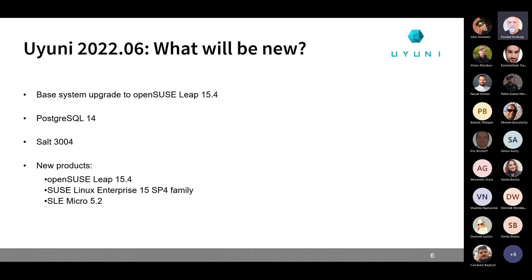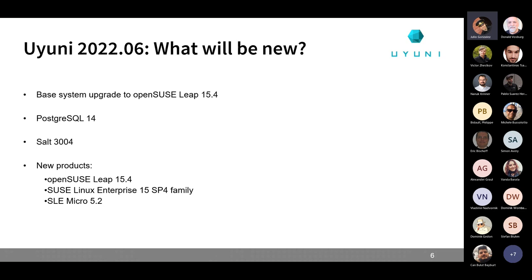Regarding whether the migration to 2022.06 is one step or multi-step: Michele will present it later, but basically it's the same as last time. There will be a server migrator script that you need to run, then you perform the PostgreSQL database update, you reboot, and then the server will be on 2022.06 already with Leap 15.4 as the base operating system.